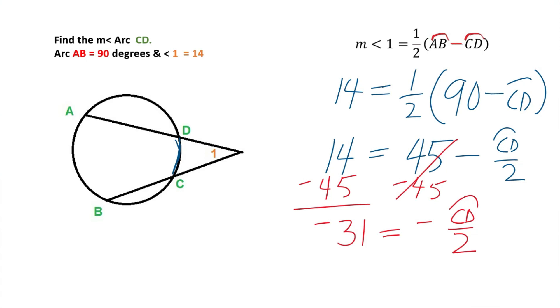To get our arc CD by itself, both of these are negatives, so I want to get rid of that 2 in the denominator. So I'm going to multiply both sides by negative 2 just to get rid of that negative. So negative 2 times negative 31 is going to give me a positive 62, and this cancels and I have my arc CD. Arc CD is equal to 62 degrees.